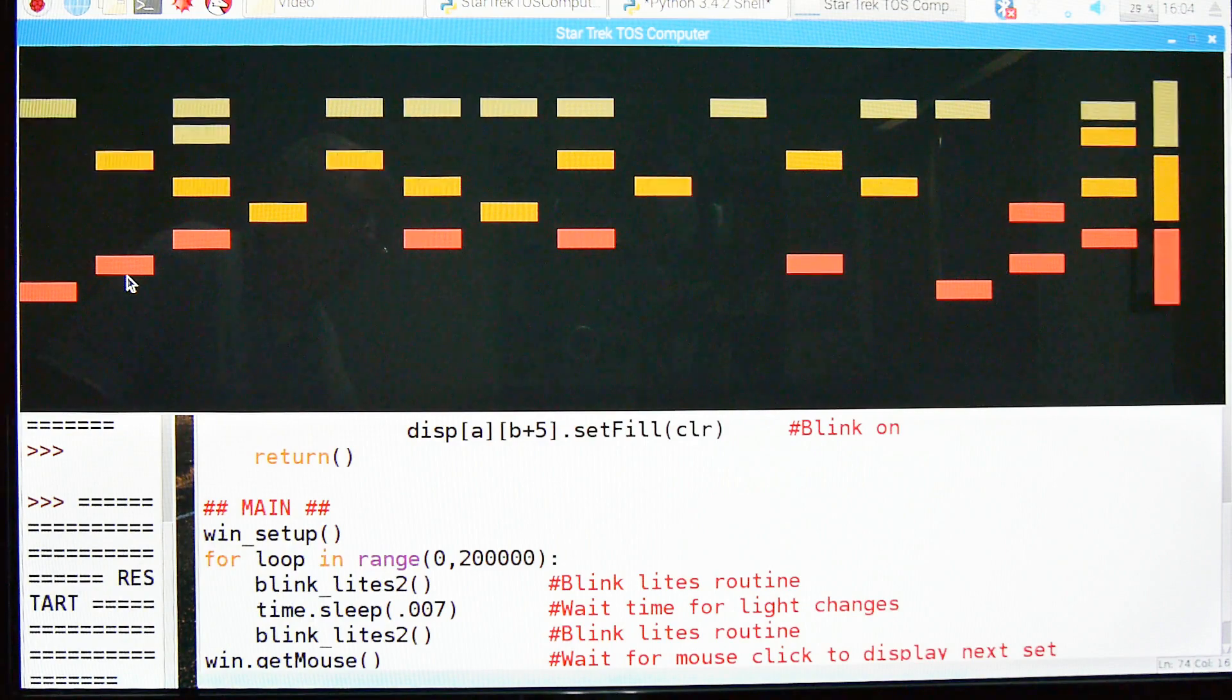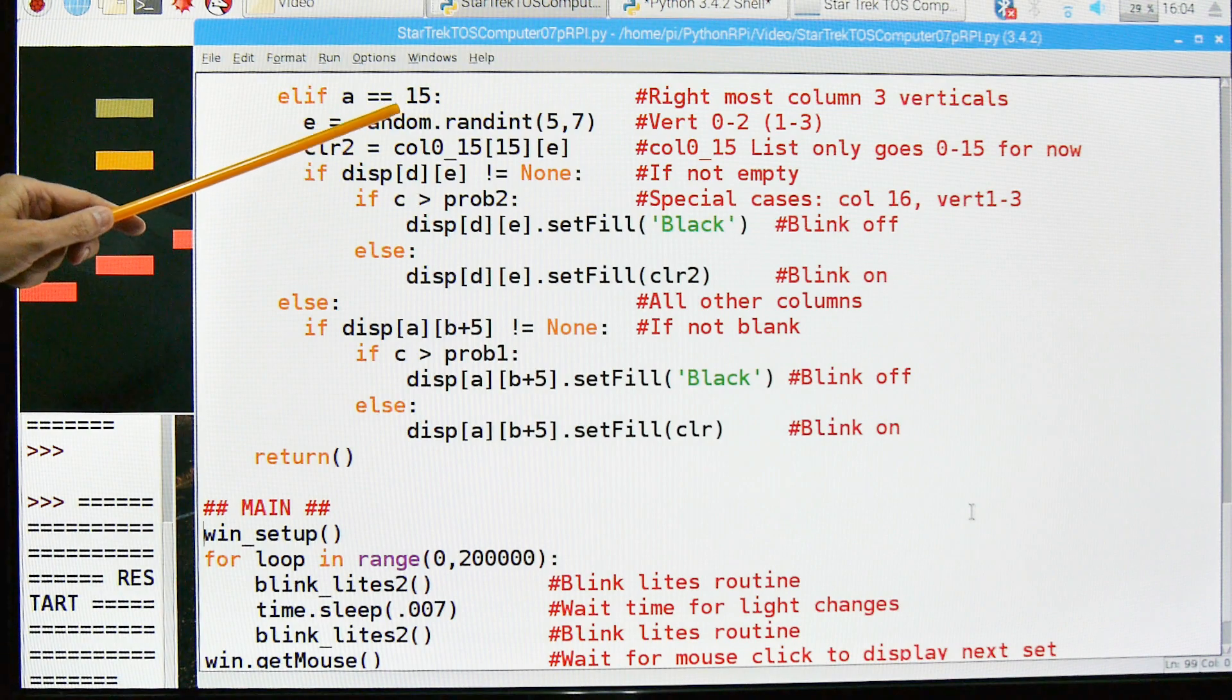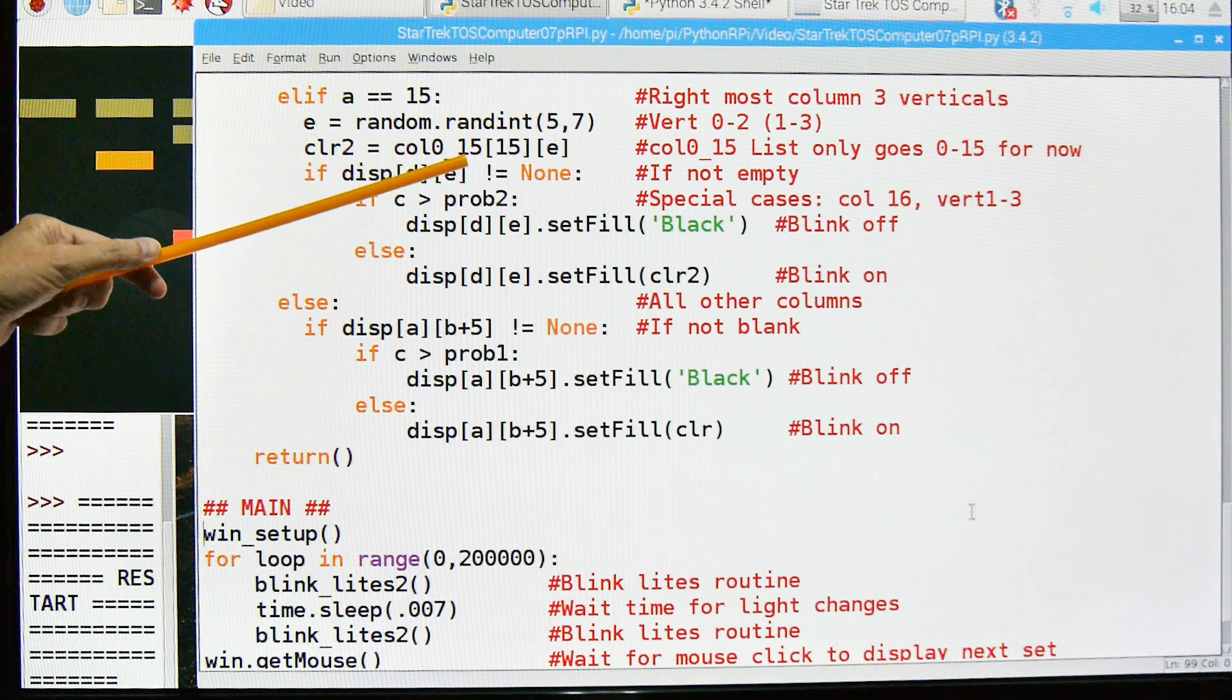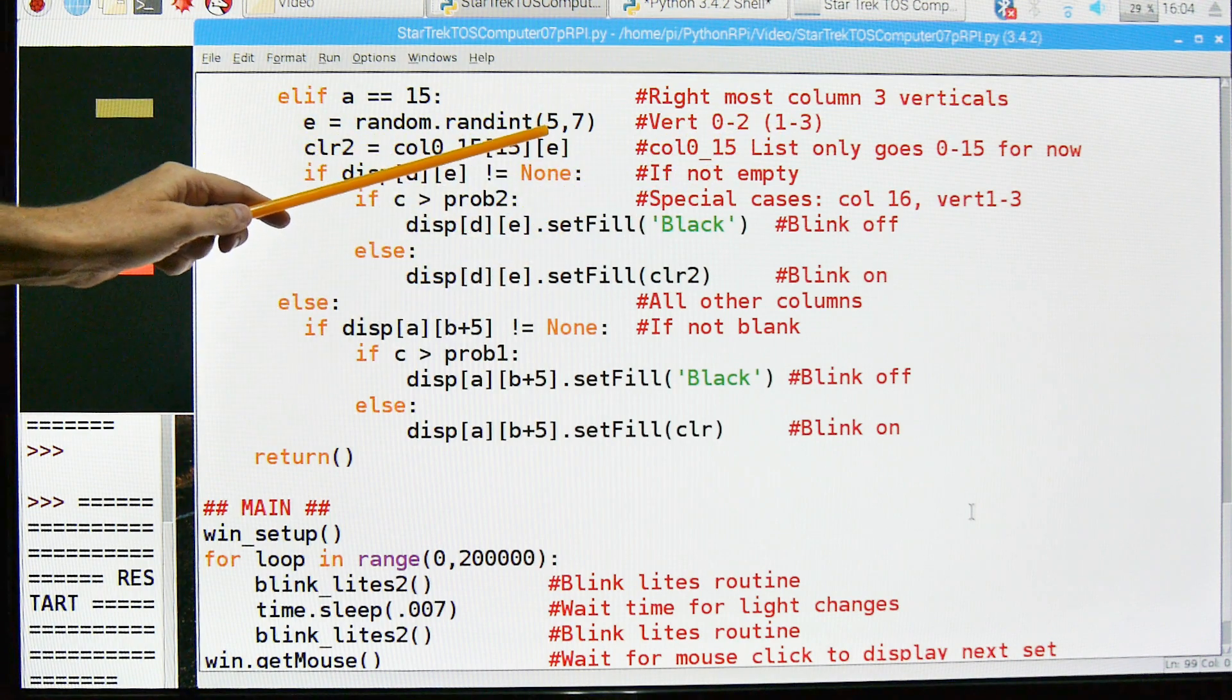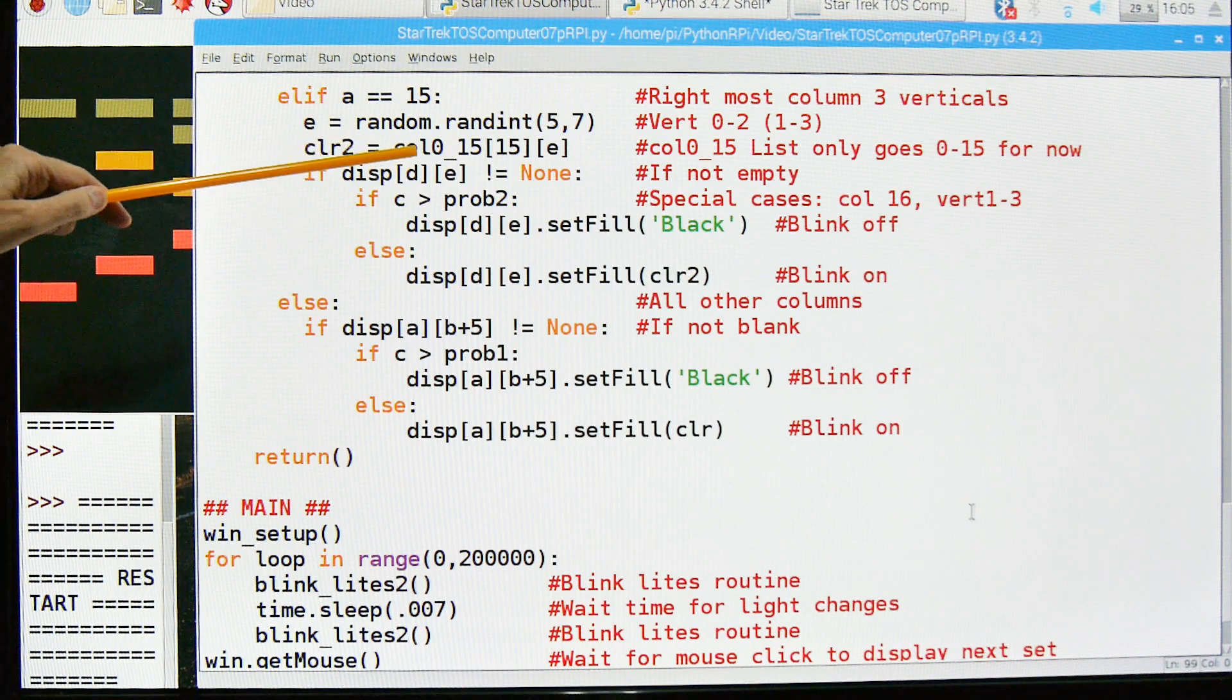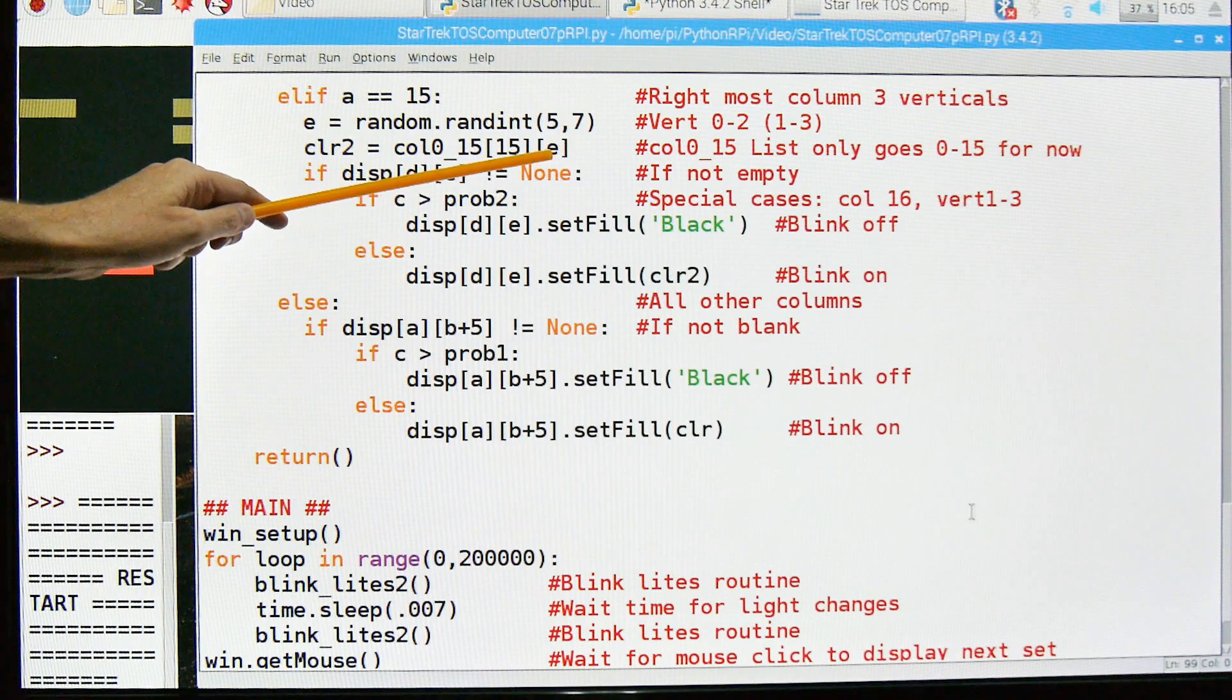We're going to look at these last three columns over there. They're numbered 15. In fact, they're actually the 16th column. But because Python starts with 0, it's 0 to 15. So the 16th column, or column number 15, these are those three verticals over there. We're going to use a little bit different randomization thing, because there's only 3. So we need a different number. So we're only going to go from 1 to 3, or in fact 0 to 2. So we're going to do a random integer from 5 to 7.